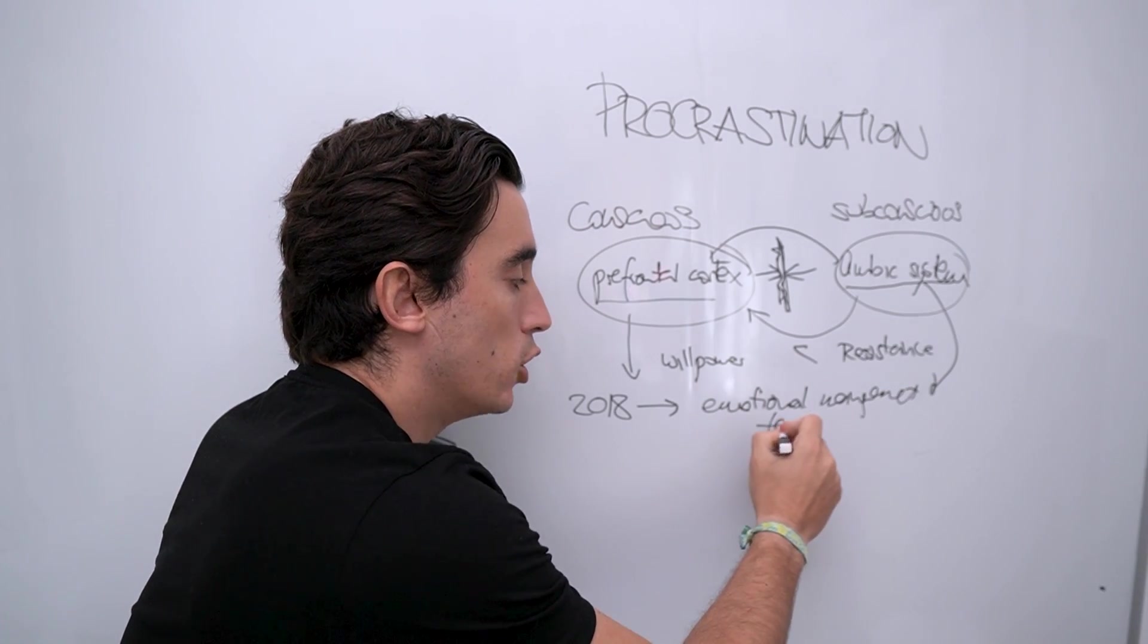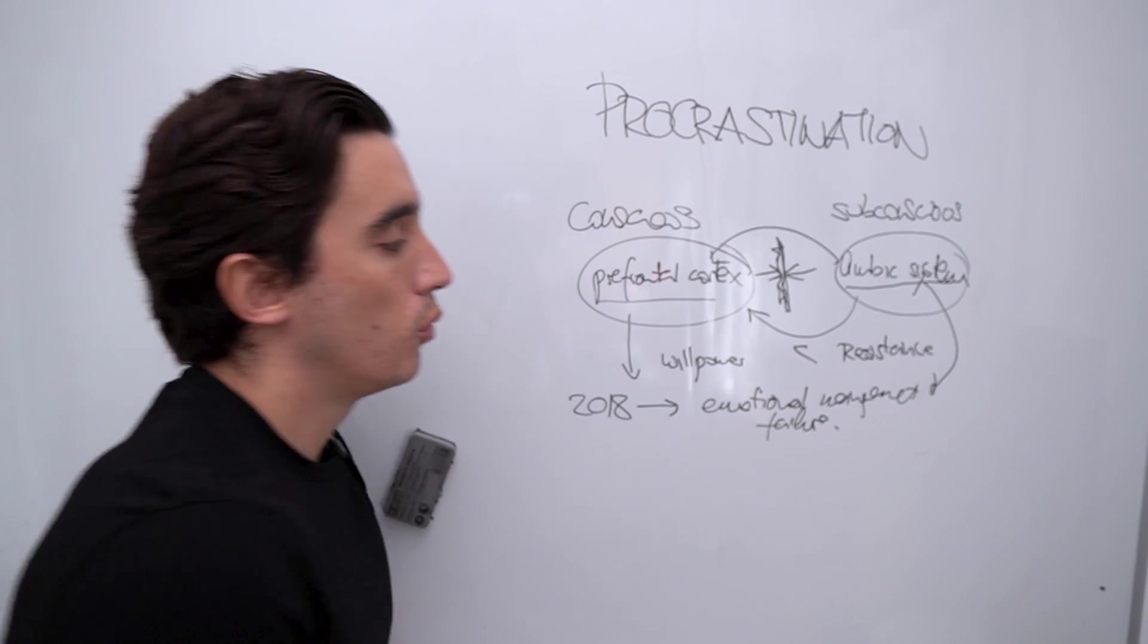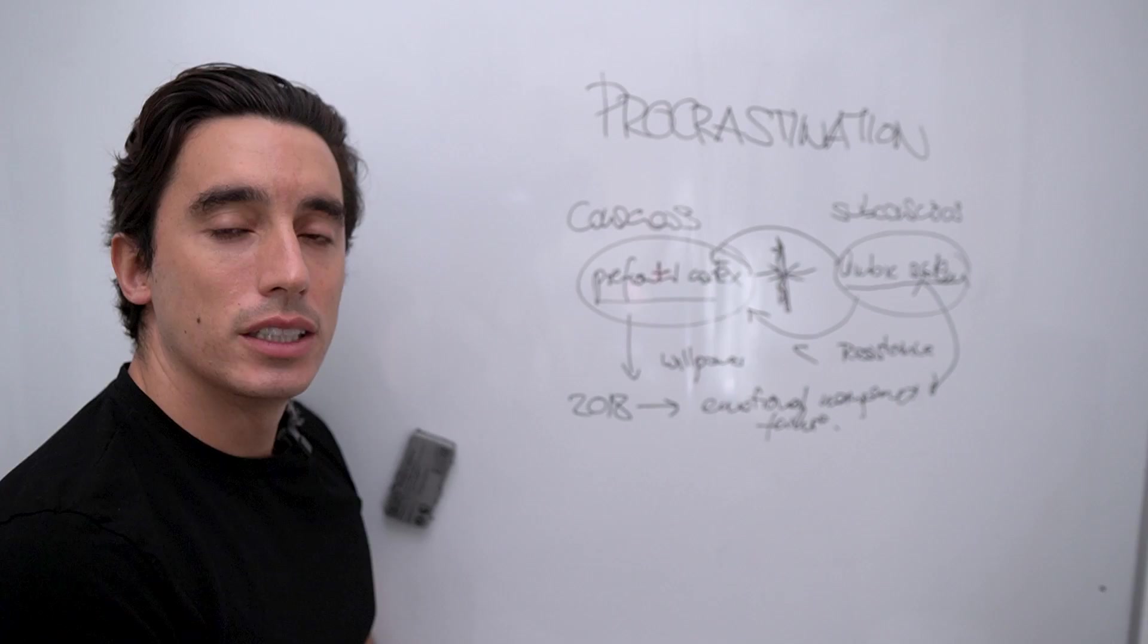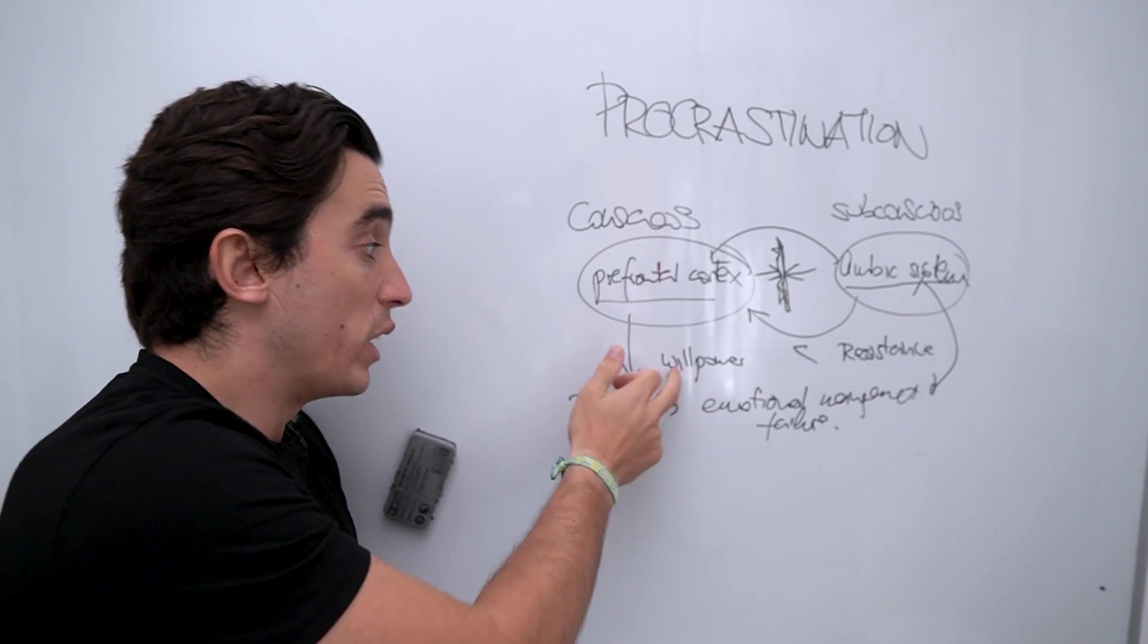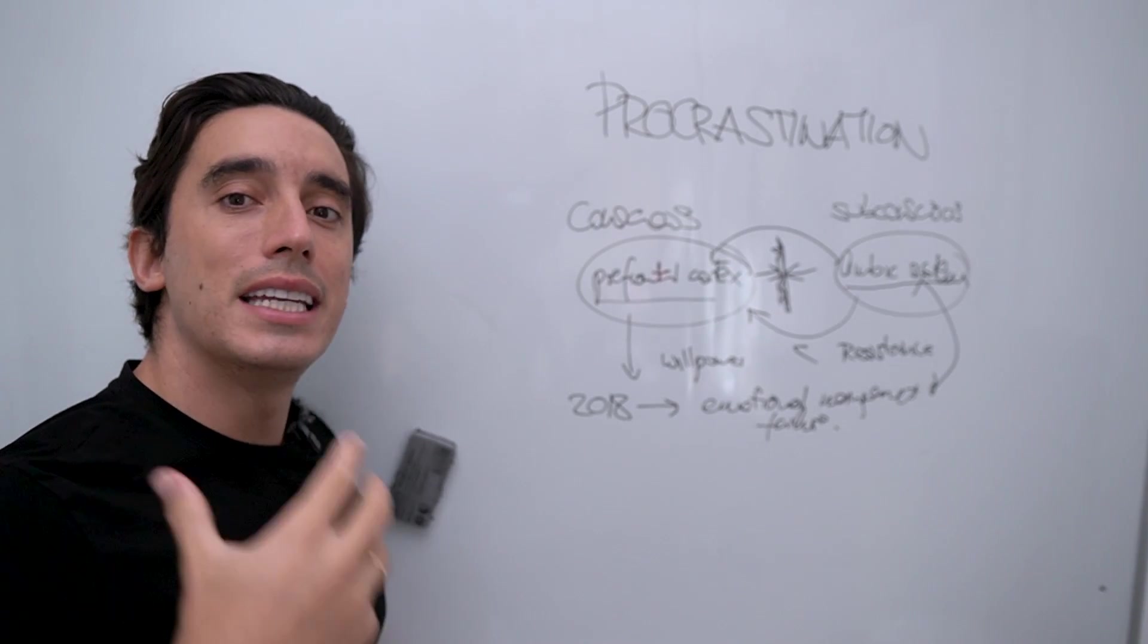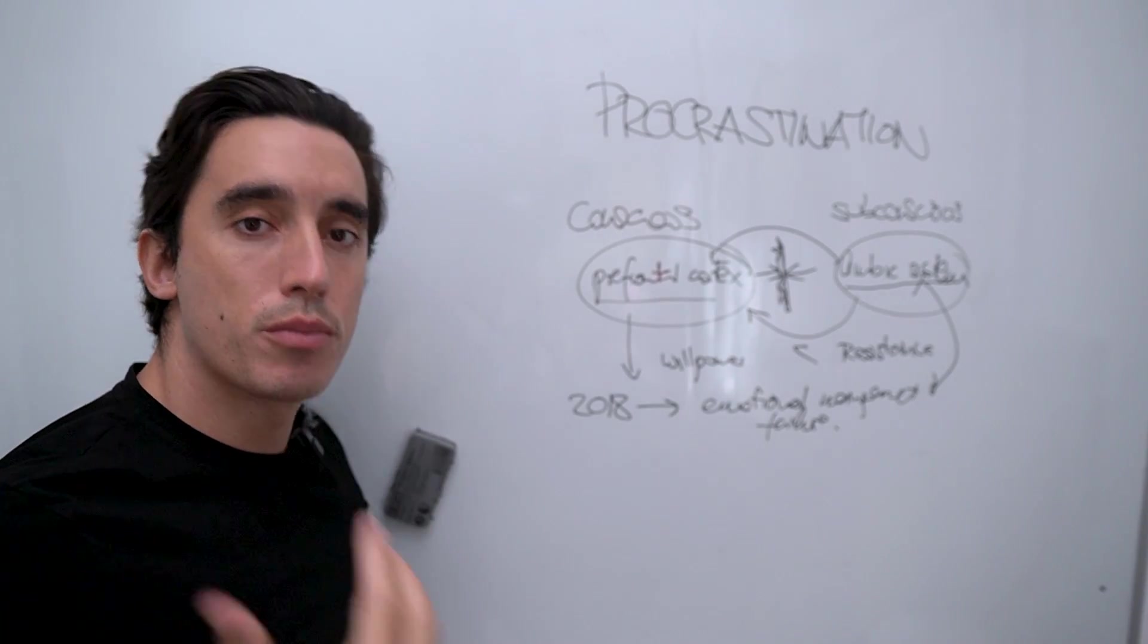So in essence, they couldn't handle themselves when doing the task they didn't want to do. So it's not a time management problem. It's not a willpower problem. It's an emotional management problem.